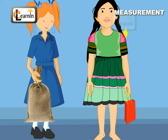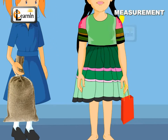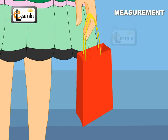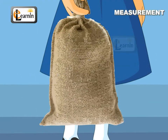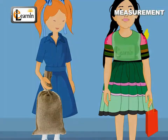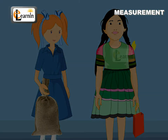Lena and Tina are carrying two bags each while walking. One is lighter and the other is heavier. This way, we can compare objects around us by measuring them.